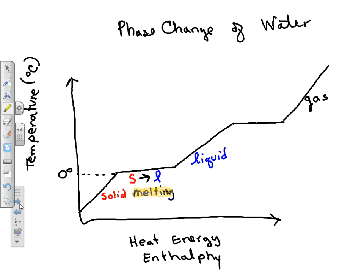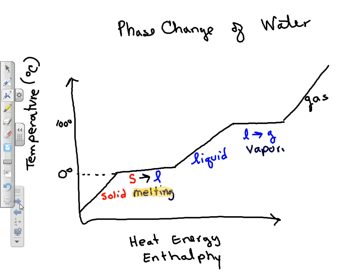Once you get it to the liquid phase, now you can increase the temperature by adding heat. Once it's at 100 degrees — so this next horizontal line is 100 — now we're going from a liquid to a gas. Remember the term? That's called vaporization, and it happens at 100 degrees. Once all your liquid has changed to a gas, now it can get hotter, and there's really no limit on that side.